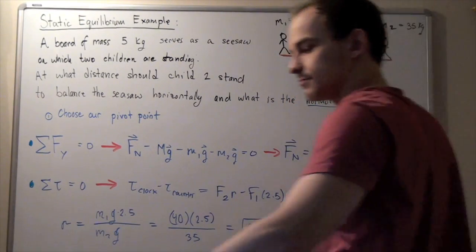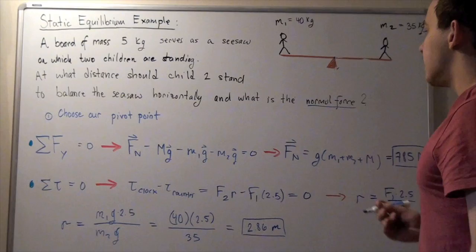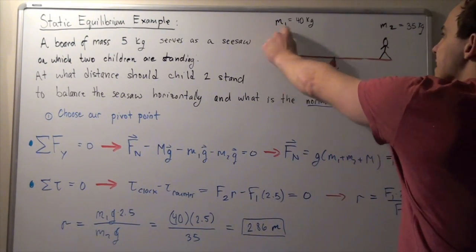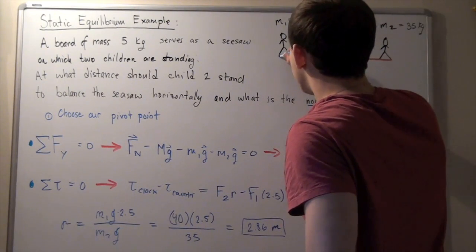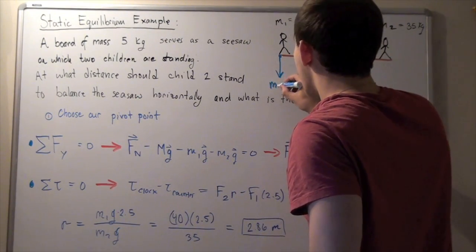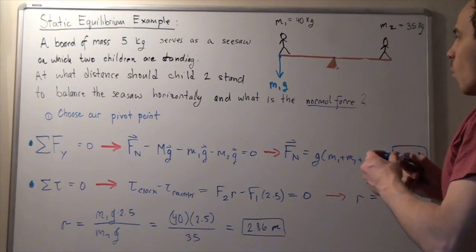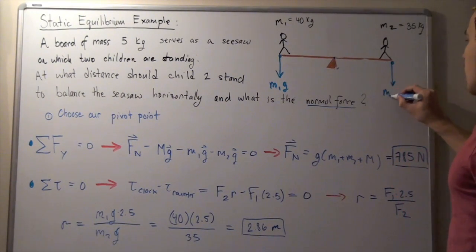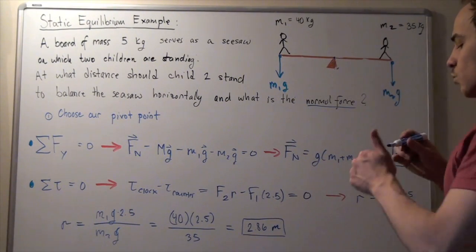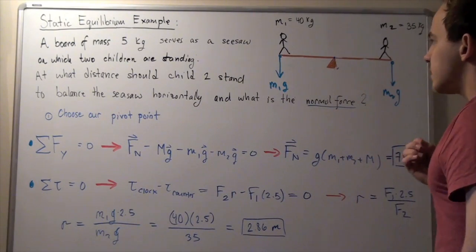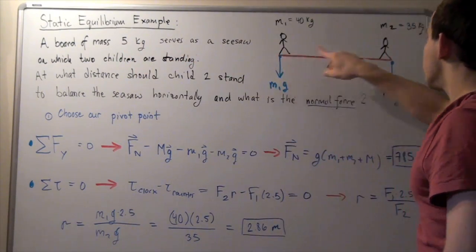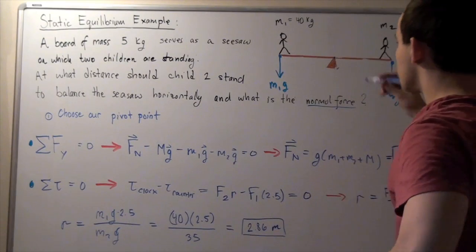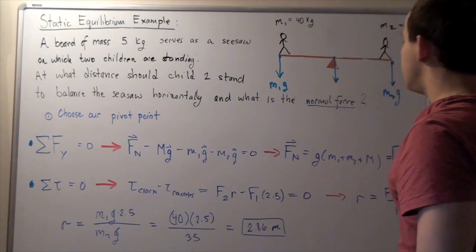The first force acting on our board is due to child 1, whose mass creates a downward gravitational force of M1 times G. Likewise, child 2 creates a downward force of M2 times G. Additionally, our board itself has a mass of 5 kilograms, which also creates a downward force — capital M times G — acting from the center of mass at the pivot point.